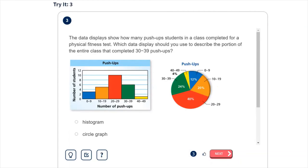Alright, now in this one, we're just going to compare the usefulness of a histogram versus a circle graph or pie chart for differing uses. So this one says the data displays show how many push-ups students in a class completed for a physical fitness test. Which data display should you use to describe the portion of the entire class that completed 30 to 39 push-ups?